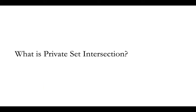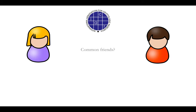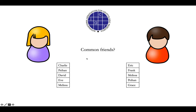First, what is private set intersection? Let's start with a simple example. Let's say Alice and Bob are two cryptographers. They meet at a crypto conference for the first time, and they want to figure out who are their common friends. Here is a list of Alice's friends, here is a list of Bob's friends, and they want to figure out who are in common. What can they do?